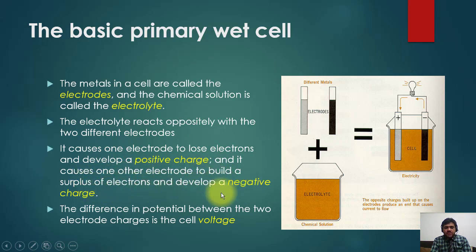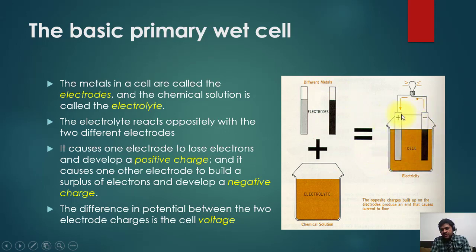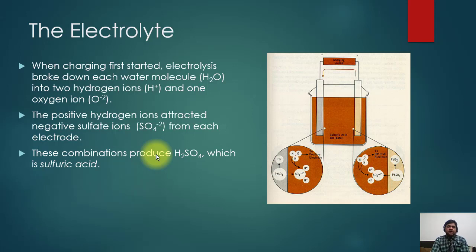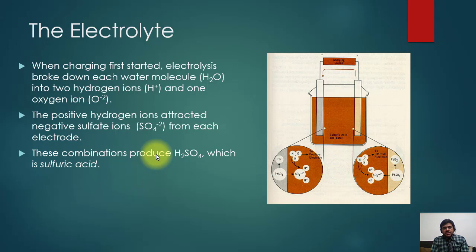The difference in potential between the two electrodes is the cell voltage. At one electrode there is an extra surplus of electrons making it negative, and at the other there is a deficiency of electrons making it positive. Current will flow through the electrolyte. When charging first starts, the electrolyte breaks down each water molecule into hydrogen and oxygen ions. The positive hydrogen ions attract the negative ions from each electrode, and this combination produces H2SO4, which is sulfuric acid.